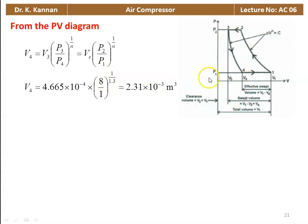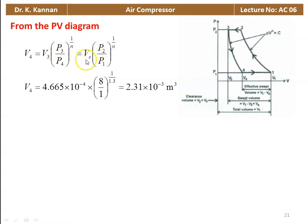From the expansion process, V4 equal to V3 into P3 by P4 to the power 1 by n. V3 equals the clearance volume Vc, P3 equals P2 and P4 equals P1. Substituting Vc equal to 4.665 times 10 to the power minus 4, P2 equal to 8 bar, P1 equal to 1 bar, to the power 1 by 1.3, V4 equals 2.31 times 10 to the power minus 3 meter cube.